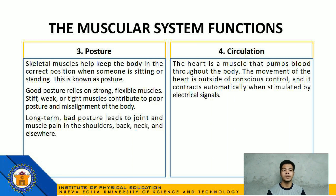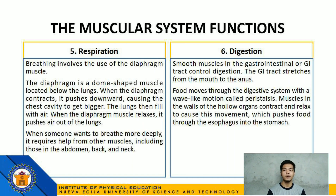Number 4: Circulation — the heart is a muscle that pumps blood throughout the body. The movement of the heart is outside of conscious control and it contracts automatically when stimulated by electrical signals. Number 5: Respiration — breathing involves the use of the diaphragm muscle, a dome-shaped muscle located below the lungs. When the diaphragm contracts, it pushes downward, causing the chest cavity to get bigger and the lungs fill with air. When the diaphragm muscle relaxes, it pushes air out of the lungs. When someone wants to breathe more deeply, it requires help from other muscles including those in the abdomen, back, and neck.